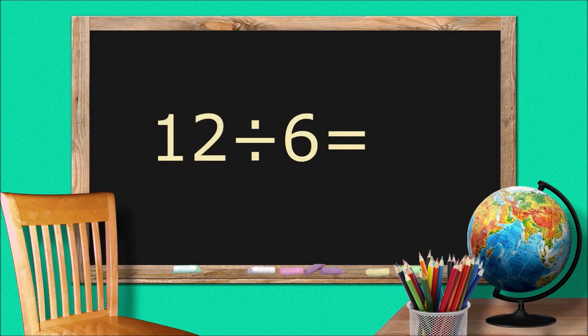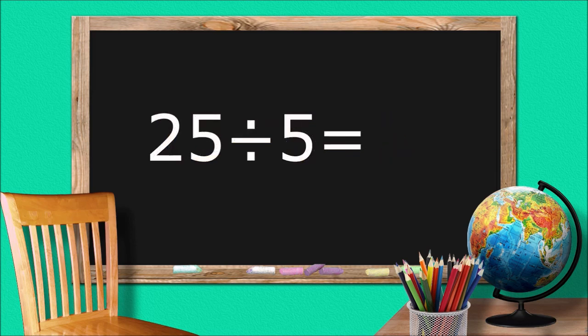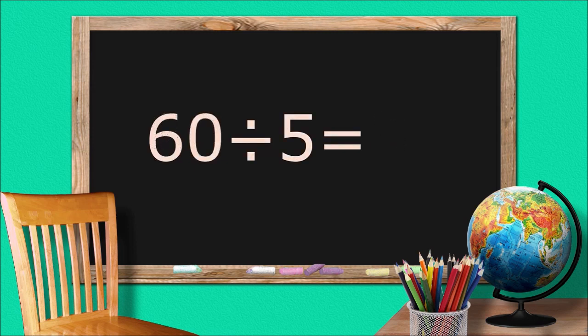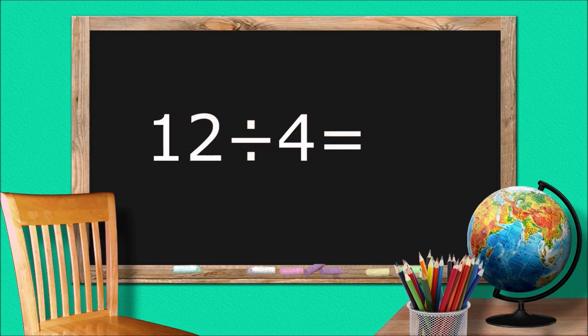Twelve divided by six equals. Twenty-five divided by five equals five. Twelve divided by four equals three.